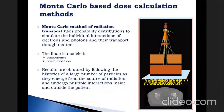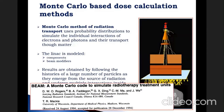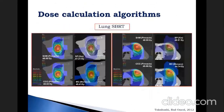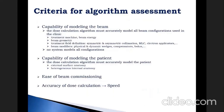Monte Carlo methods use probability distributions to simulate the individual interactions of electrons and photons and their transport through matter. Results are obtained by following the histories of a large number of particles as they emerge from the radiation source and undergo multiple interactions inside and outside the patient. Studies show that for the same clinical condition, different algorithms provide different dose predictions, so we need criteria to assess our algorithms.